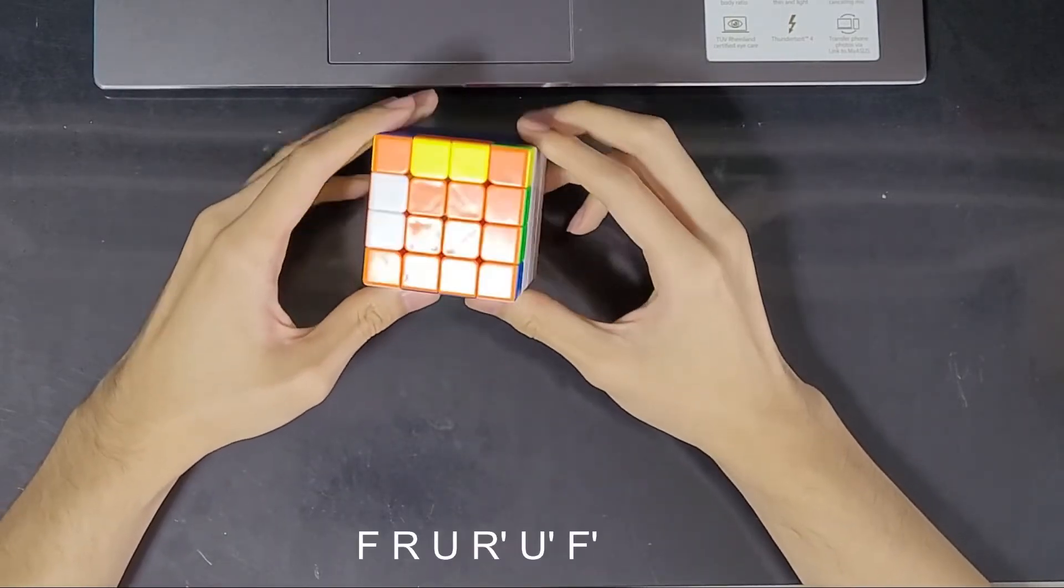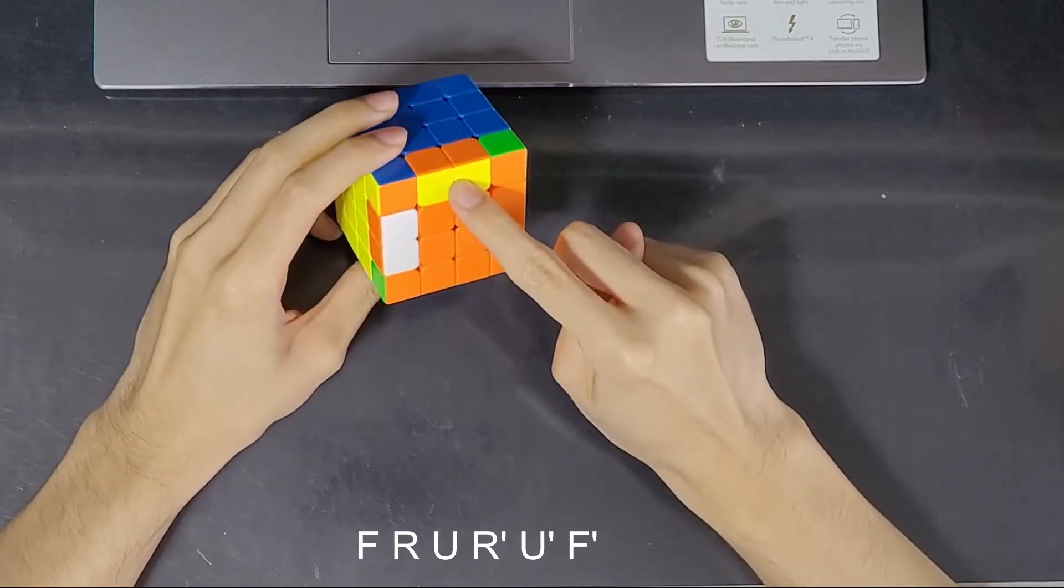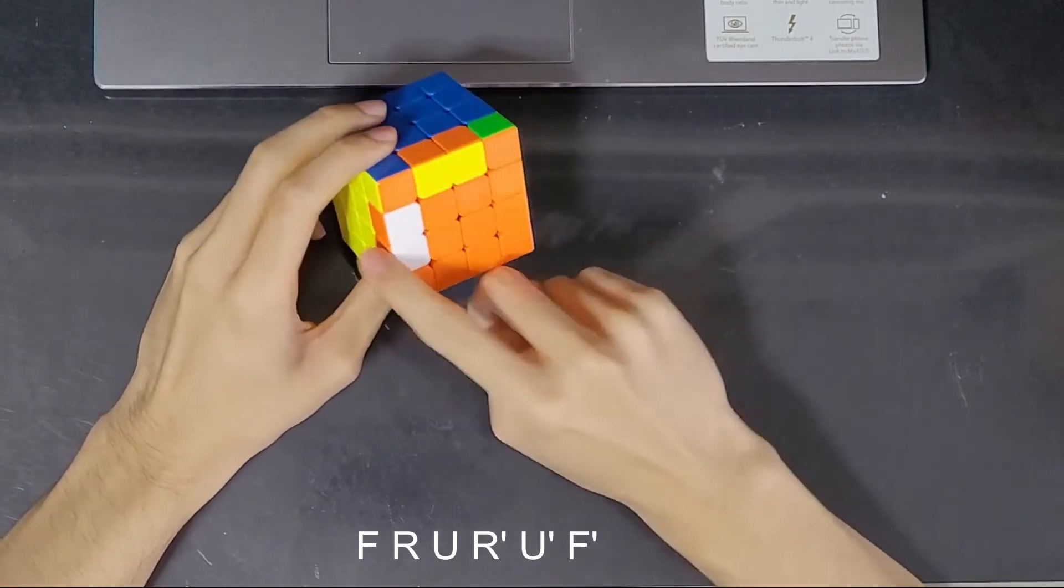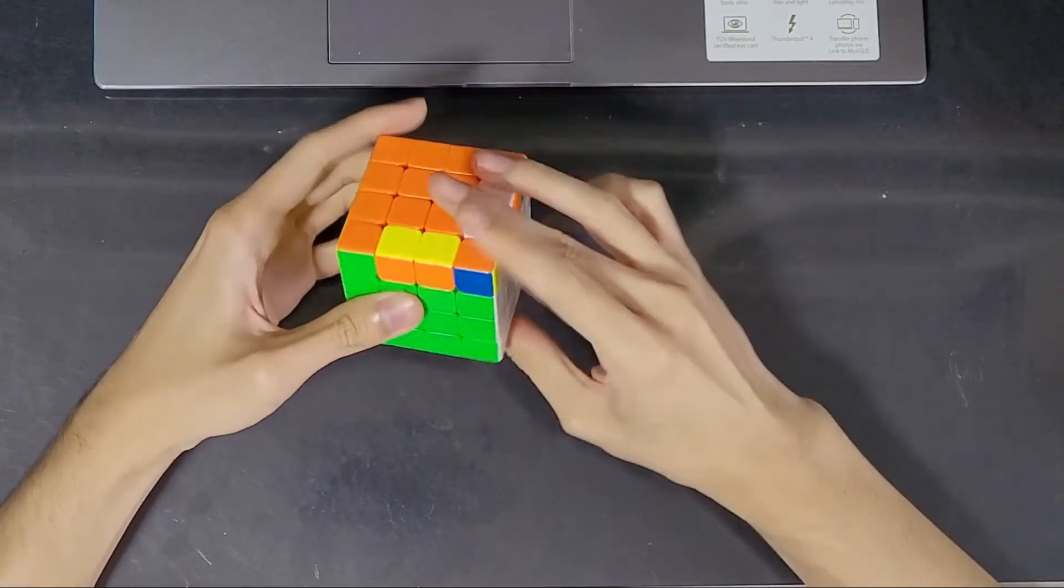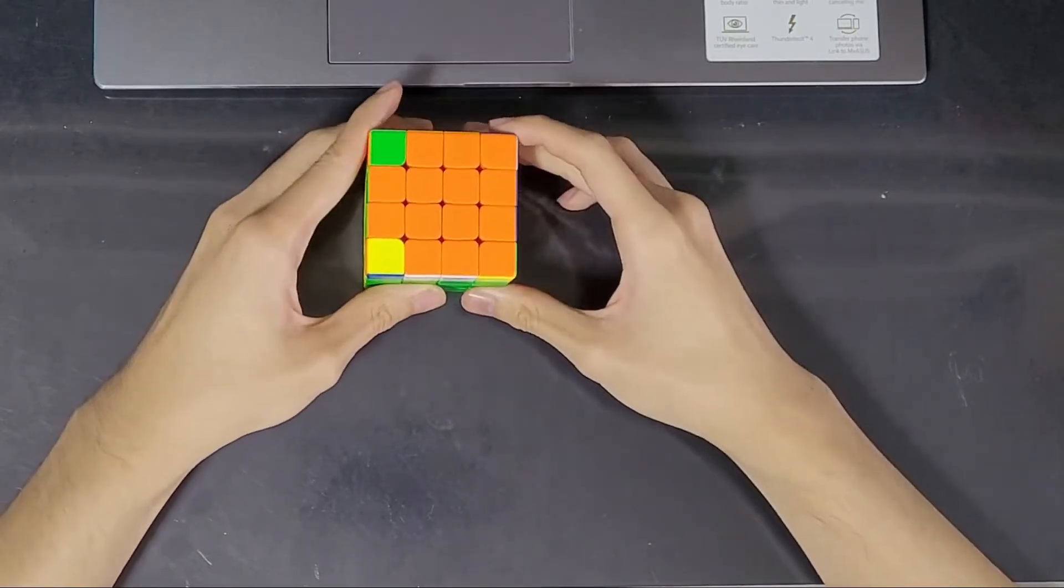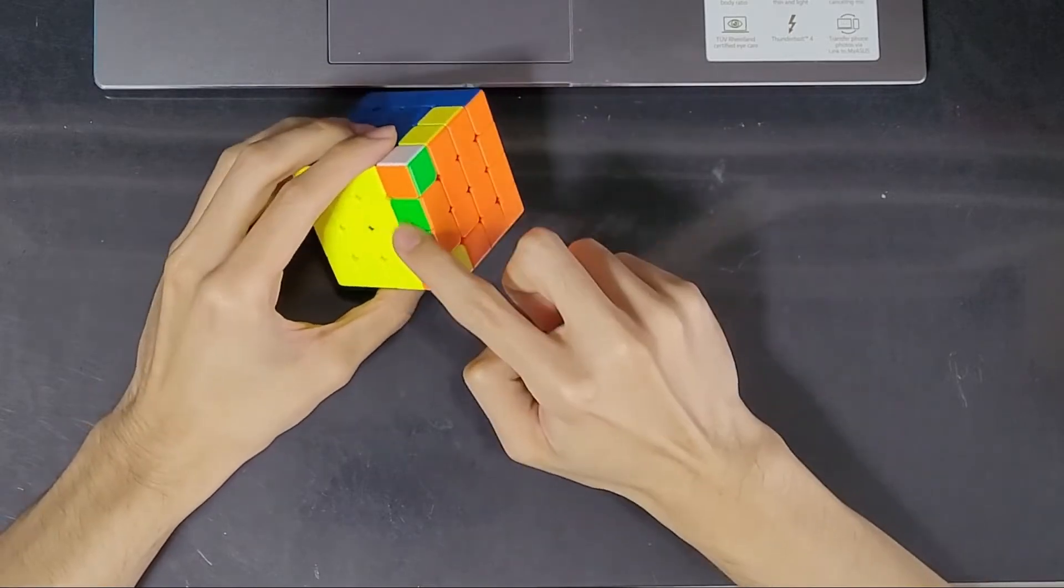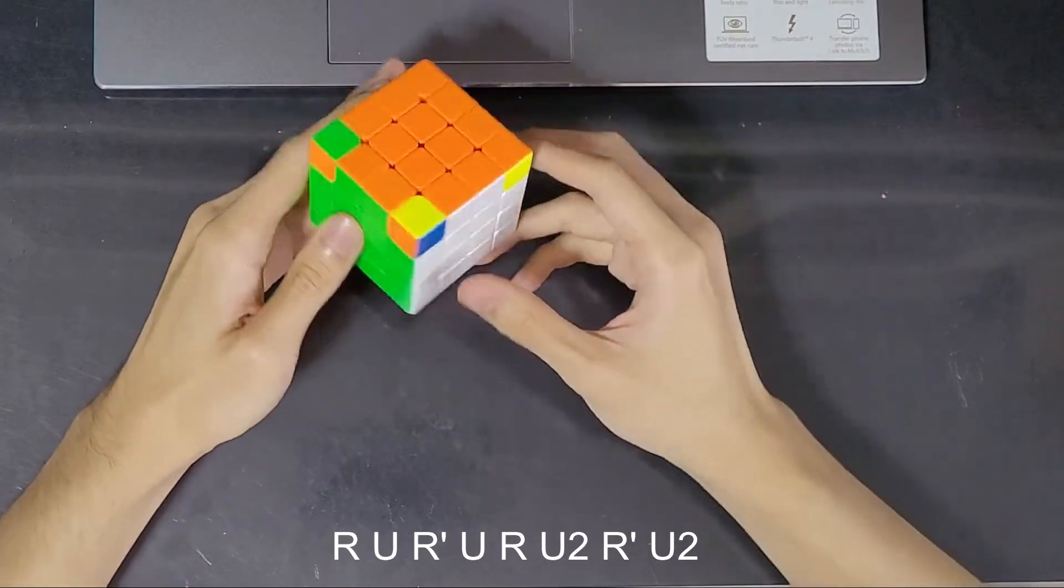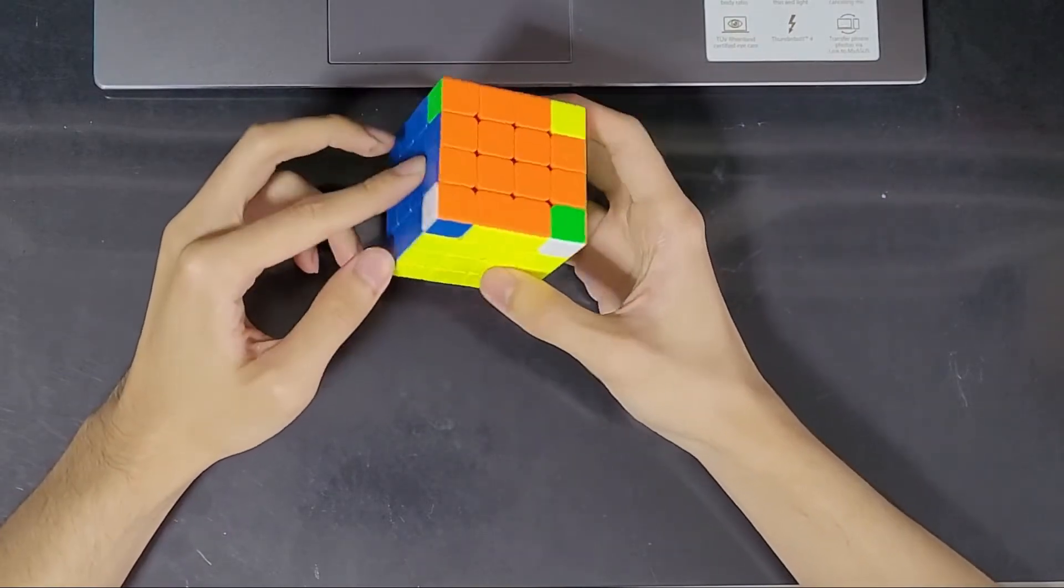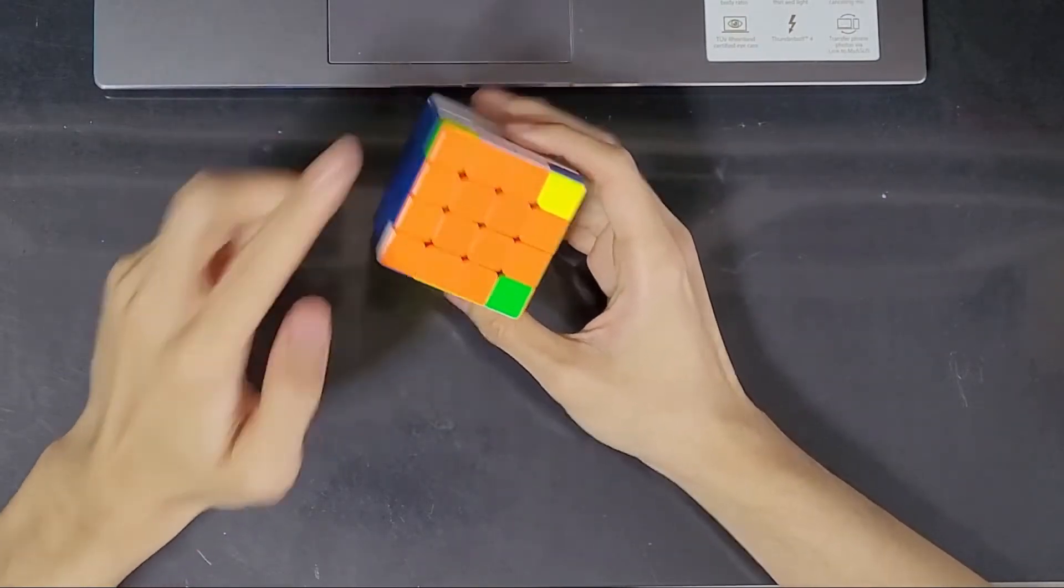So the next step of solving the 3x3 will be to flip all 4 of the orange edges to be correct. After that, we can now move these edges to their correct positions. In case I got lucky and kind of skipped this step. And then after that, we will be moving the corners to their correct location.